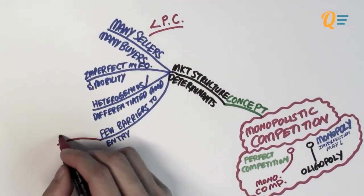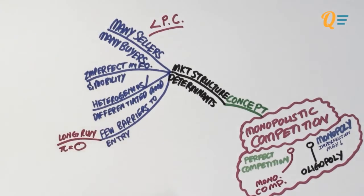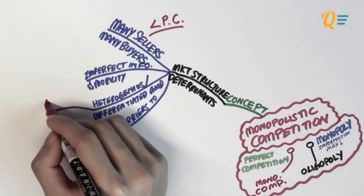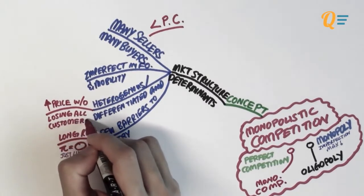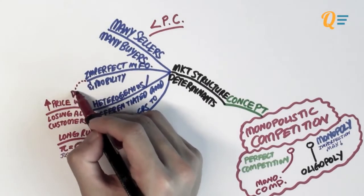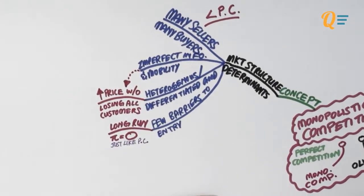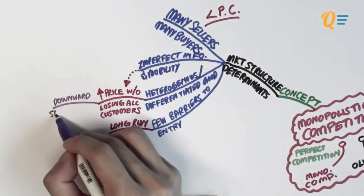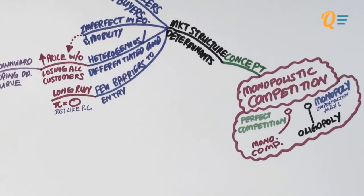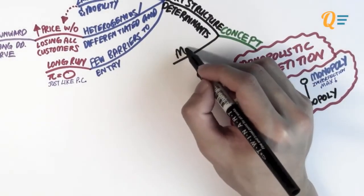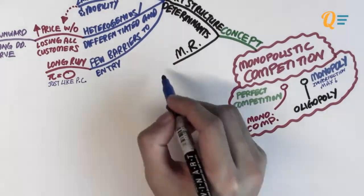Looking at the implications: when there are few barriers to entry, in the long run none of the firms can be making positive profits, just like perfect competition — the initial equilibrium should show zero profits. And the fact that there is a differentiated good means firms can increase price without losing all their customers. This is also due to imperfect information and mobility, which gives firms some control over price, resulting in a downward sloping demand curve — combining elements of perfect competition and monopoly.